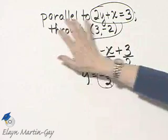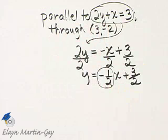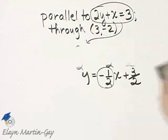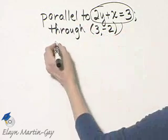Since I want a line parallel to this one, I simply use the same slope. So we'll use a slope of negative 1 half. Now let's continue. We'll use a slope of negative 1 half.